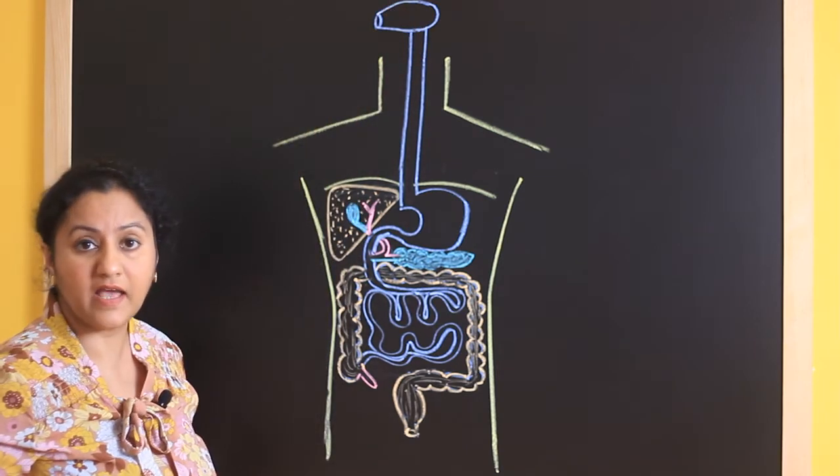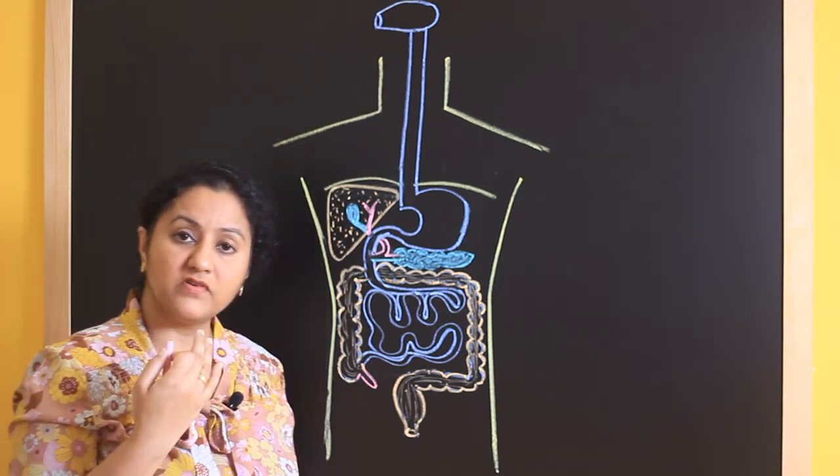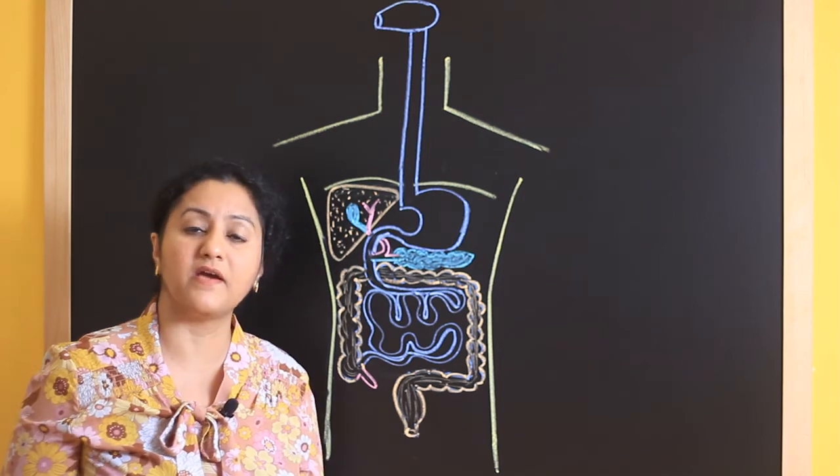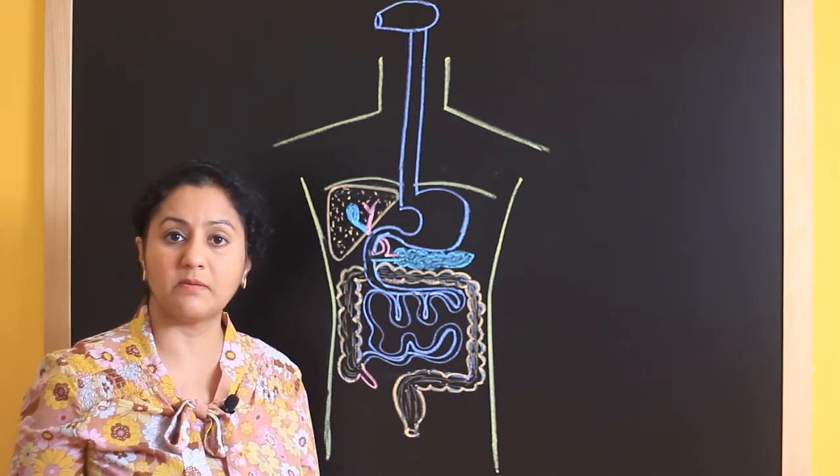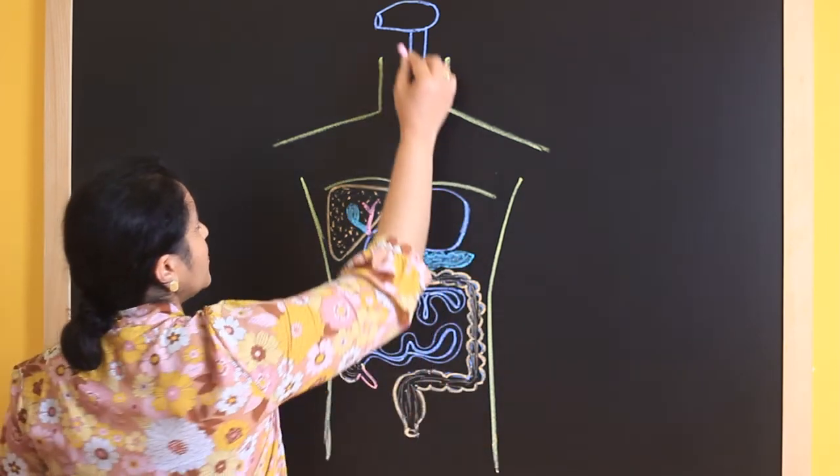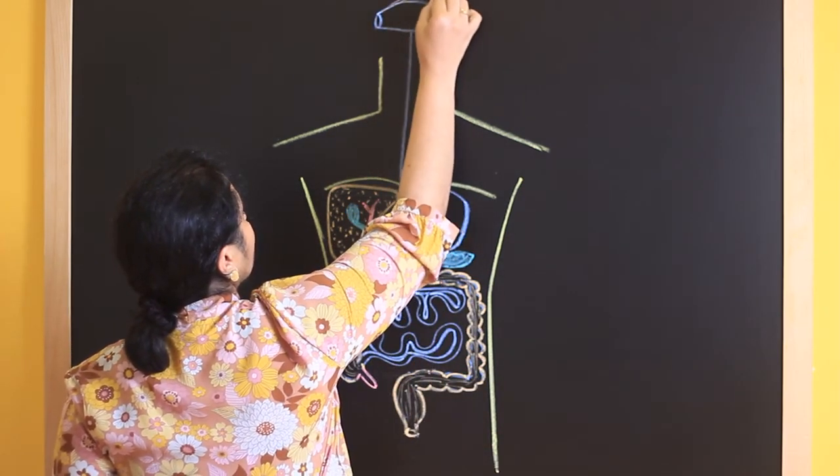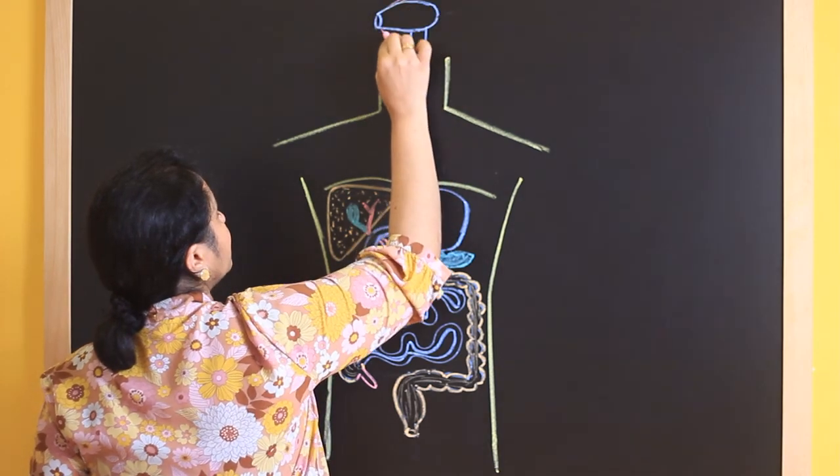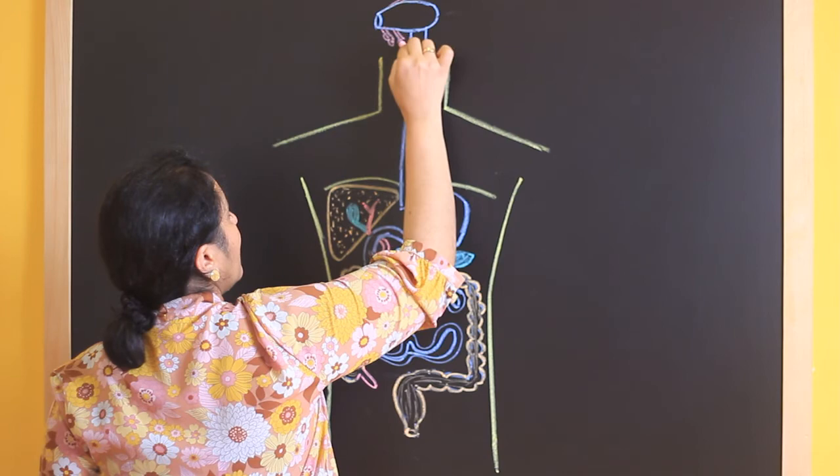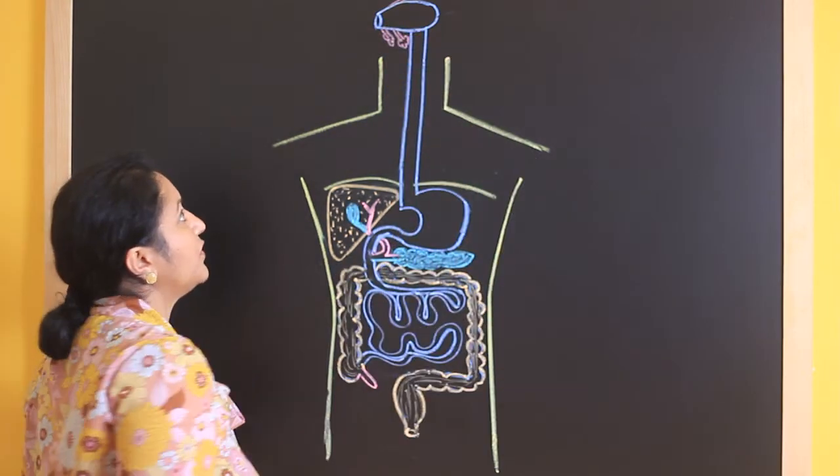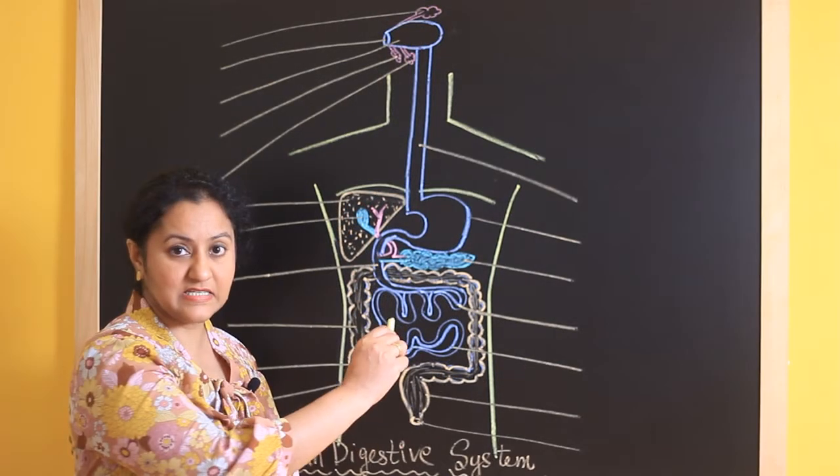Then coming to the buccal cavity. You know that inside a buccal cavity salivary glands are present. There are three pairs of salivary glands - Parotid, sublingual and submandibular. Let's draw that as well. This is parotid, sublingual below the tongue and submandibular below the lower jaw.